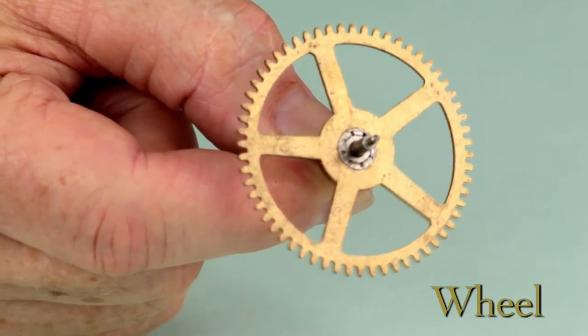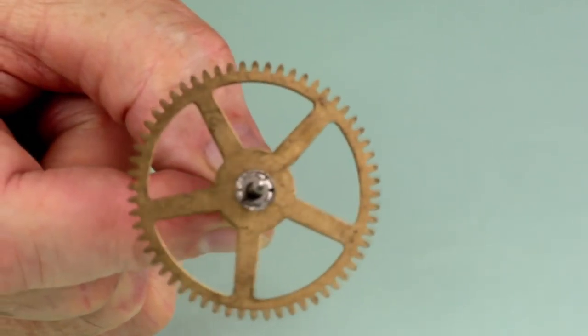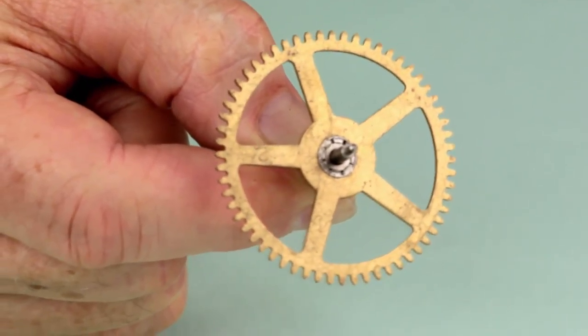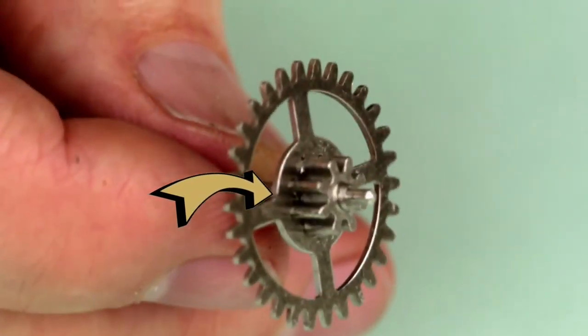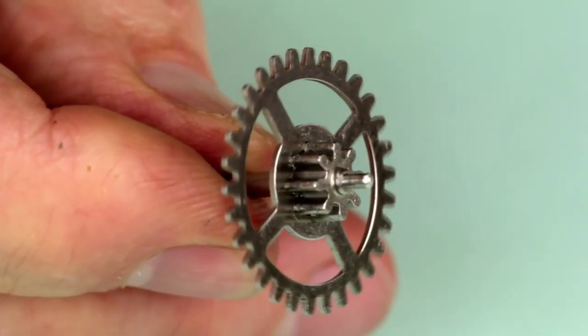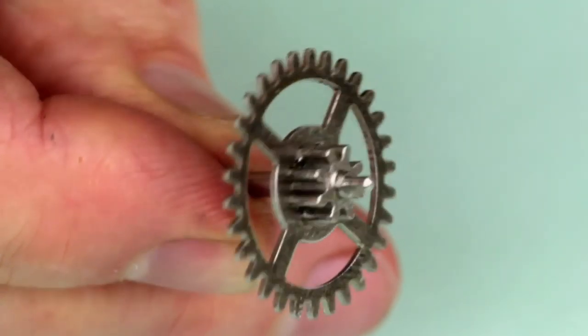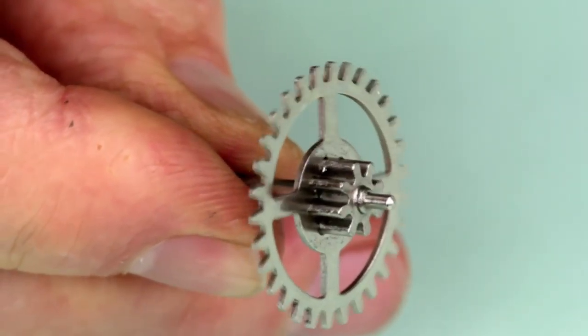This is a wheel in clock speak. It's usually made of brass. Generally, wheels have 20 or more teeth. This is a cut pinion, usually made of steel. These teeth are called leaves in clock speak. Pinions usually have fewer than 20 leaves. Cut pinions are difficult to repair. If damaged or worn, they usually have to be replaced.